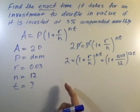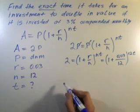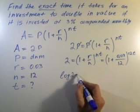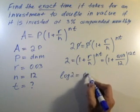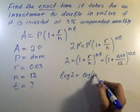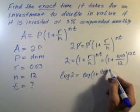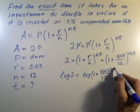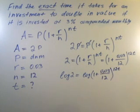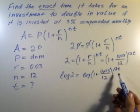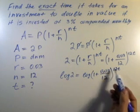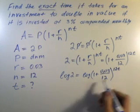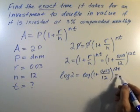If we take the logarithm of both sides, we get log(2) = log((1 + 0.03/12)^(12T)). The property of the logarithm is the exponent goes as a multiple of the logarithm.